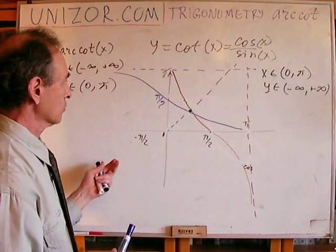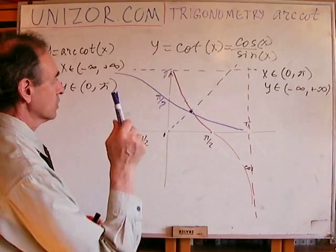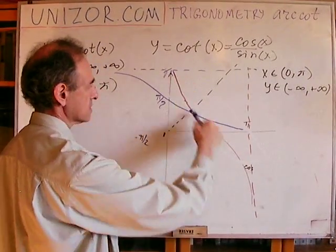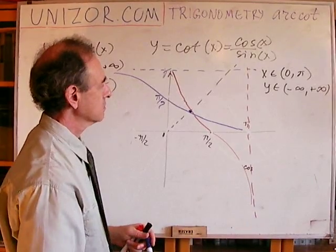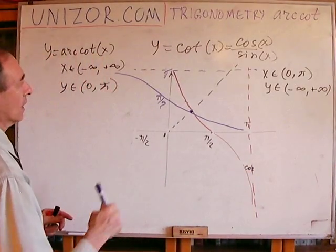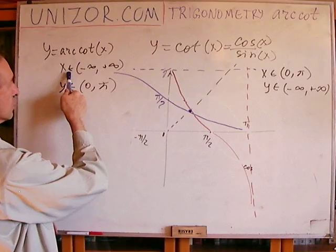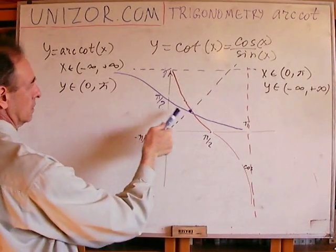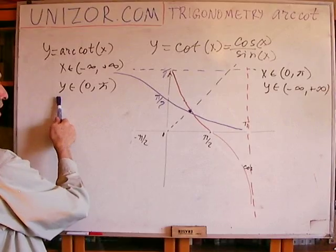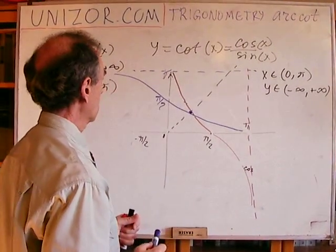I draw it based on the symmetry between the graph of the function and the graph of the inverse function. I have reduced my original function cotangent to the area from 0 to pi, where it's monotonically decreasing from plus infinity to minus infinity as the angle goes from 0 to pi, not including 0 and pi, not including the boundaries. And the inverse function has the domain which corresponds to the range of the original function. The range is all real numbers. And the inverse function has the range which corresponds to the domain of the original function. So, that's the definition.